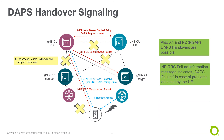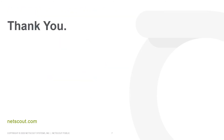If the UE detects any problems during the DAPS handover, it will send a New Radio RRC failure information message back to the CU-CP. This failure information message has a cause code that indicates a DAPS failure. This is what happens in case of an unsuccessful handover. And this is all you need to know about the DAPS handover. Thank you and bye-bye.